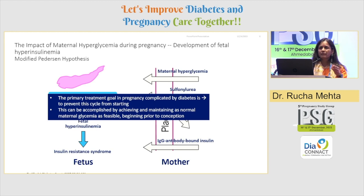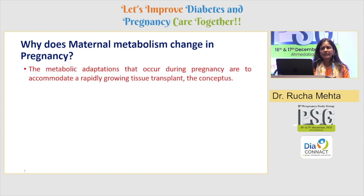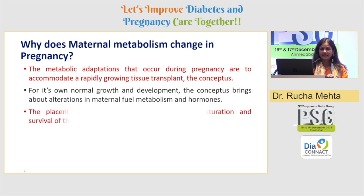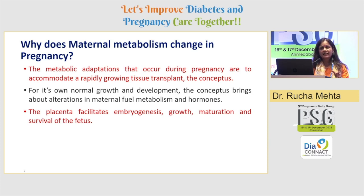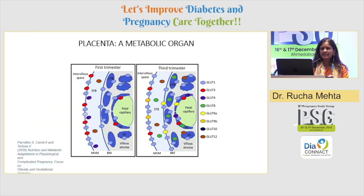The primary treatment goal in pregnancy is to prevent the cycle from starting, and this can be achieved if you maintain near-normal glycemia, beginning even prior to conception. You need to start with education — prevention is the key. Maternal metabolism changes in pregnancy to accommodate the rapidly growing fetus. The fasting sugar in a normal pregnancy can be as low as 60 mg/dL. The placenta facilitates all of this, and the final aim is an uninterrupted nutrient supply to the fetus.